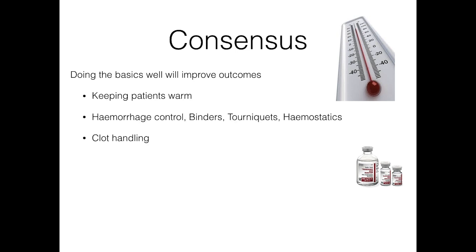So what can we agree on? Doing the basics well improves outcomes: keep patients warm with a bear hug as they come into resus. Early haemorrhage control with direct pressure, elevation, haemostatic agents, pelvic binders for those at risk, and tourniquets for exsanguinating extremity injury. We need to be careful about clot handling — using scoops or trauma mats to transfer patients to and from CT, and transferring to theatre as carefully as possible.